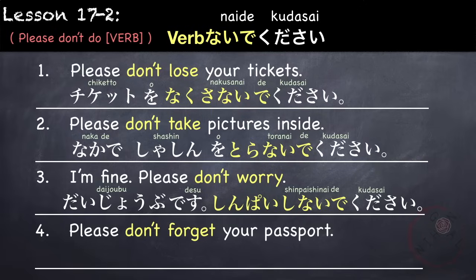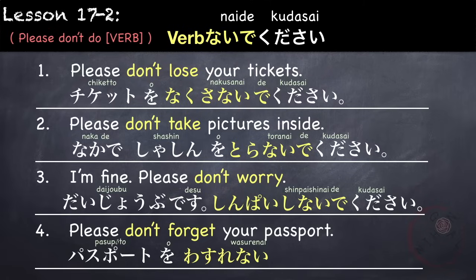'Please don't forget your passport.' Anata no pasuporto wo wasurenai de kudasai. The verb wasuremasu is from group two, so we simply change masu to nai: wasurenai. Pasuporto wo wasurenai de kudasai.